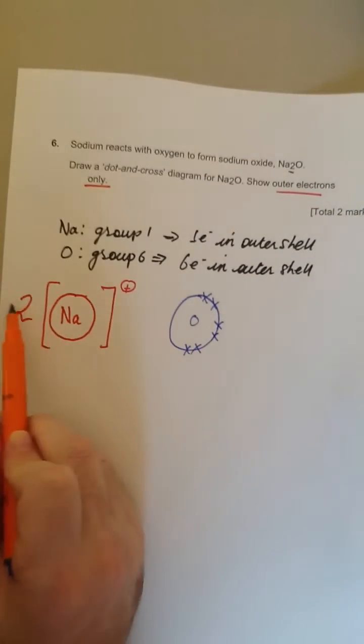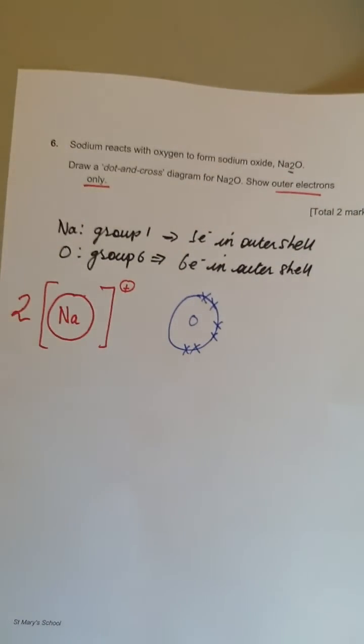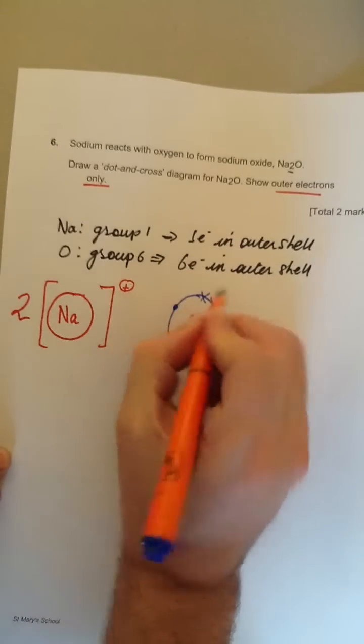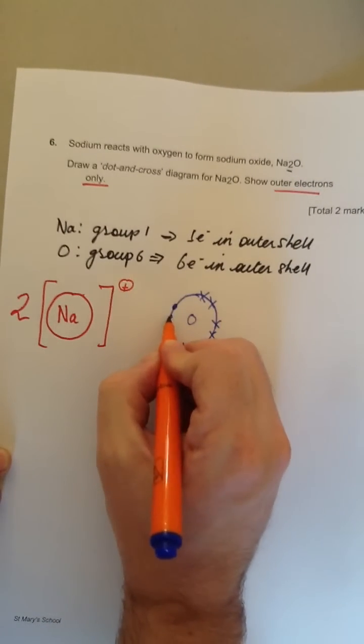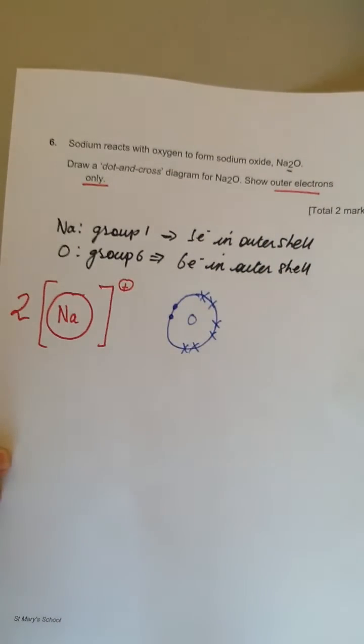But every sodium atom has given it one electron. I'm going to show this by a dot. So that's from one of the sodium atoms. That's from another sodium atom.